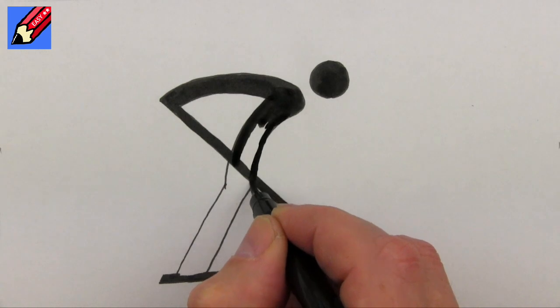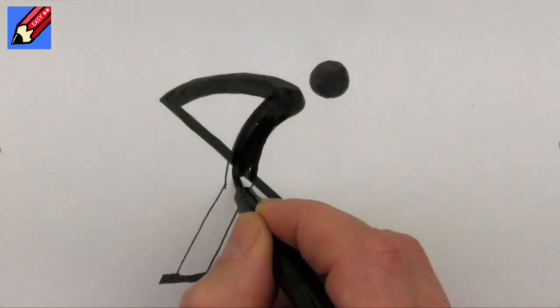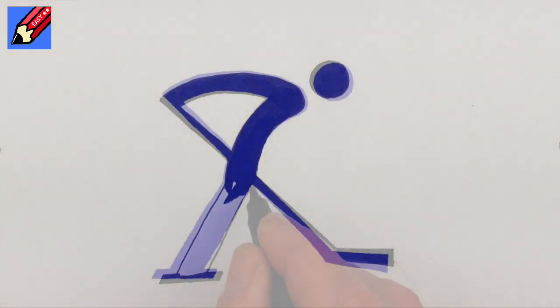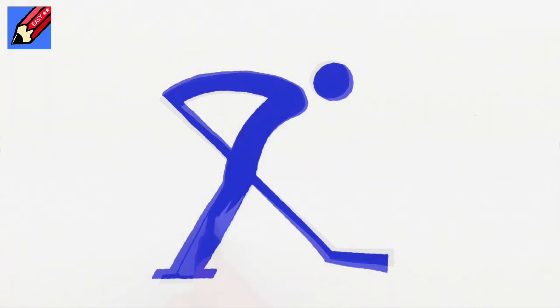There you go, how to draw an ice hockey player pictogram real easy. Make sure you're subscribed to Draw Stuff Real Easy and keep coming back for lots more drawings every week. In the meantime, keep drawing, drawing, drawing, practice, practice, practice, and I'll see you next time. Take care now, bye bye.